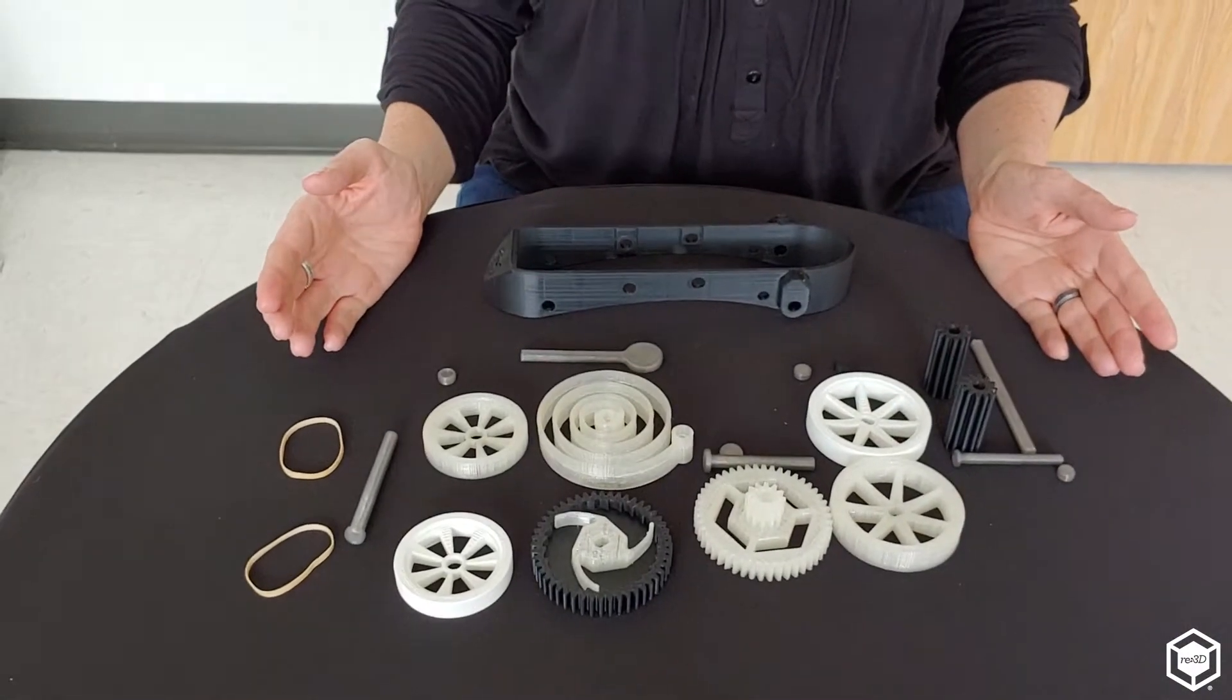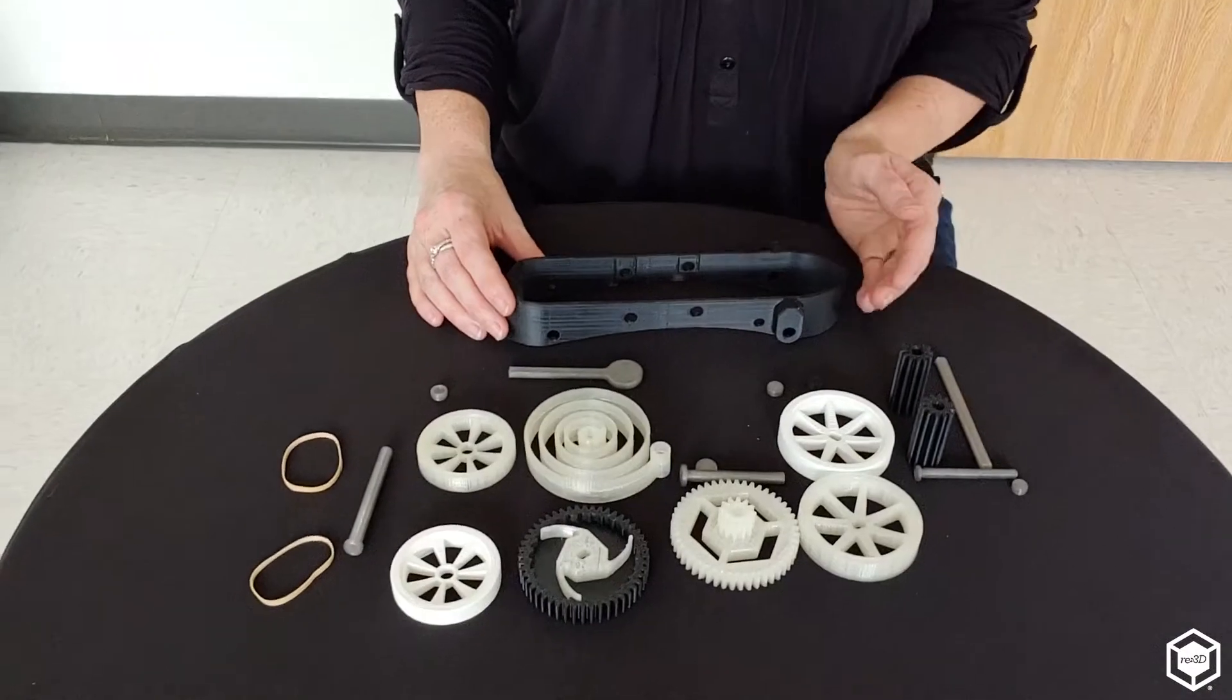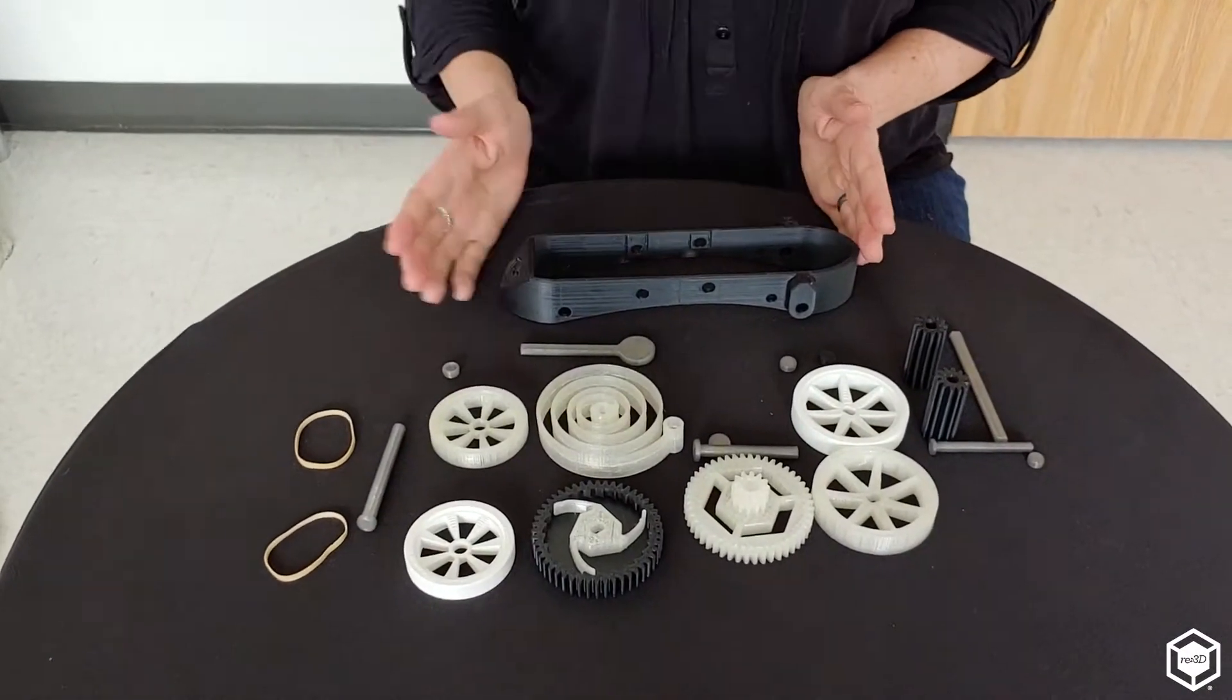We're going to start with all of these parts here. We've got four wheels, a gear system, a few axles, and a chassis. The work we're going to do is from the back of the car to the front.